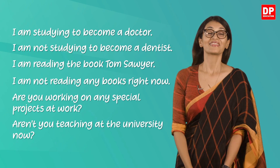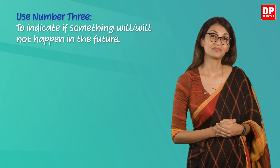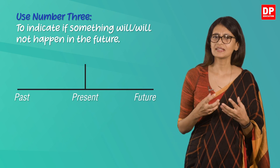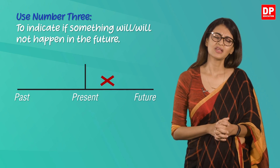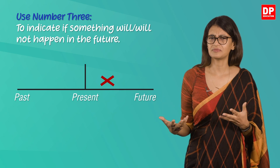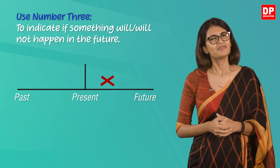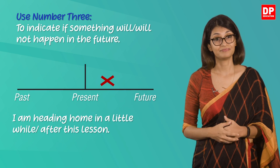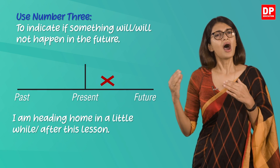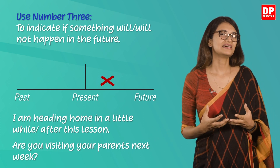Let's look at use number three. We use the present continuous tense to show that something will or will not happen in the near future. Near future means in a short time or very soon. For example: 'I'm heading home in a little while' or 'after this lesson,' or 'Are you visiting your parents next week?' Now that you are familiar with when to use the present continuous tense, let's look at an exercise.